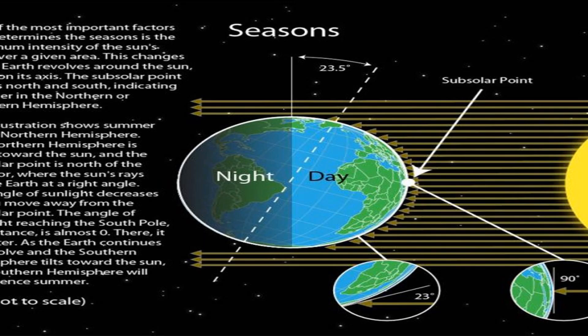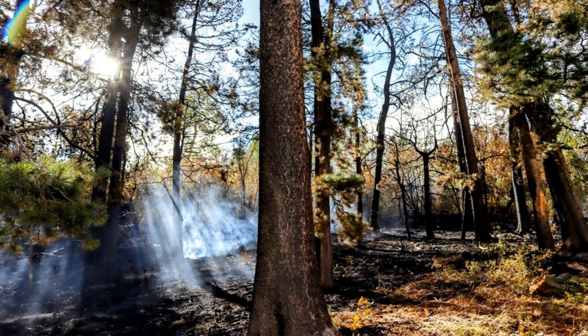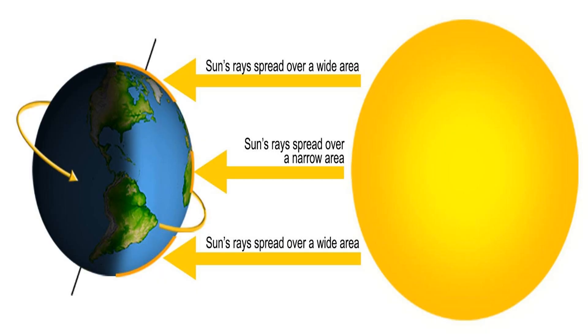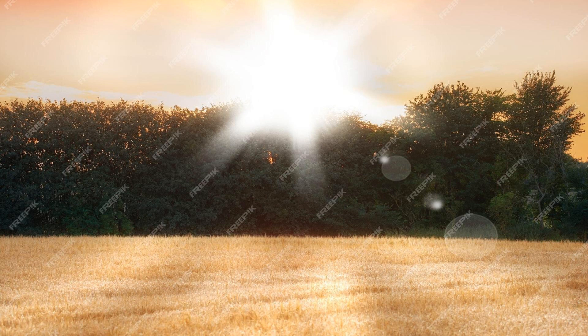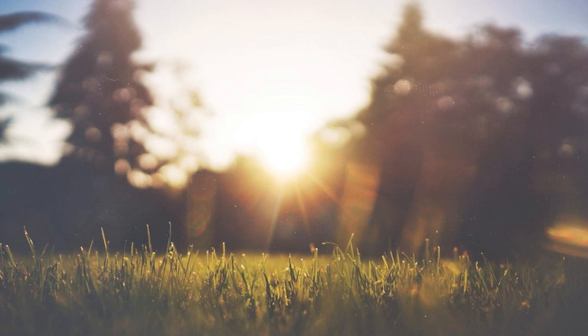During summer in a hemisphere tilted towards the sun, the longer days result in more hours of sunlight. This extended duration of sunlight allows for more heating of the Earth's surface, leading to higher temperatures and the abundance of daylight. Conversely, during winter in a hemisphere tilted away from the sun, the shorter days mean less daylight hours. This reduced duration of sunlight results in less heating, cooler temperatures, and shorter periods of daylight. The varying duration of sunlight plays a crucial role in the distinct characteristics and atmosphere of each season.